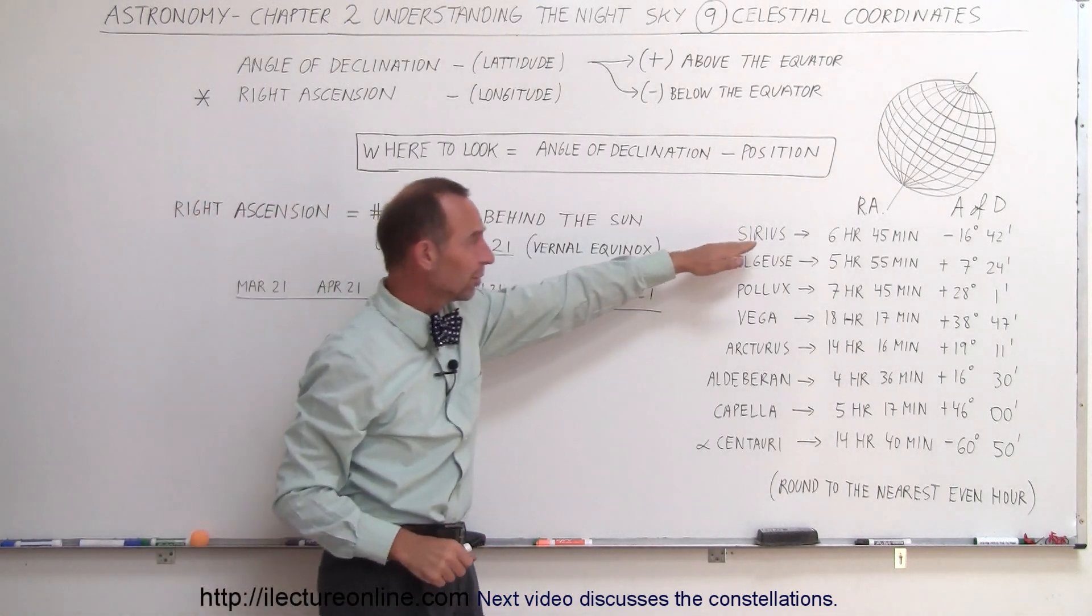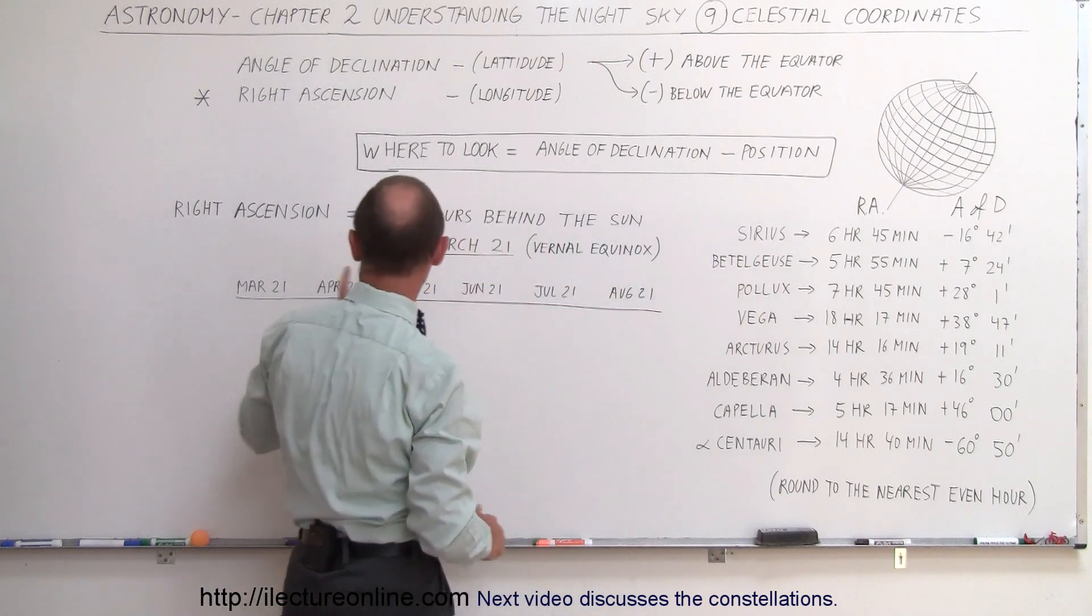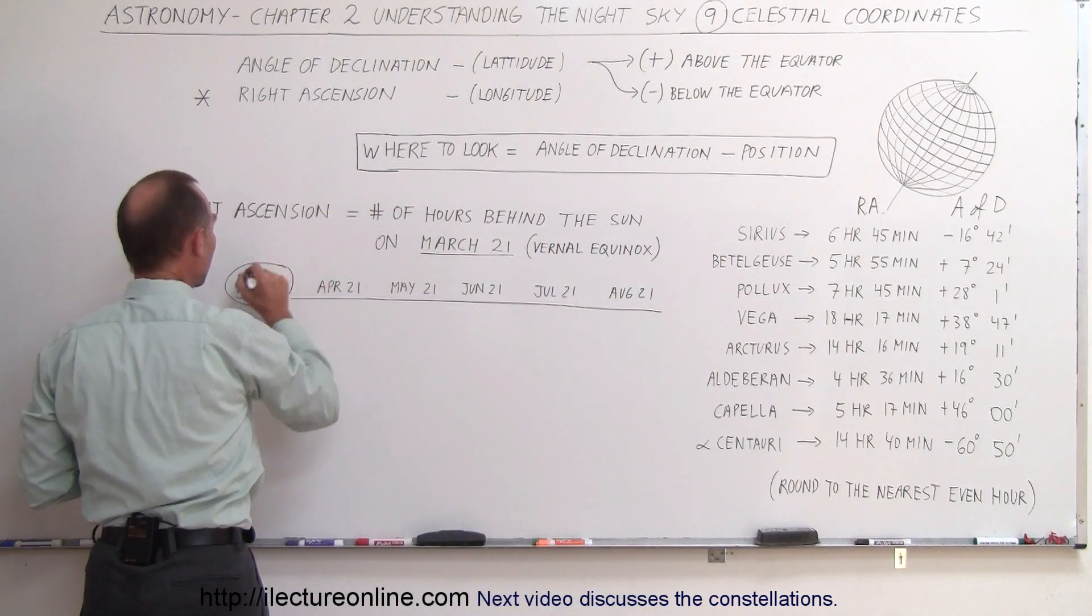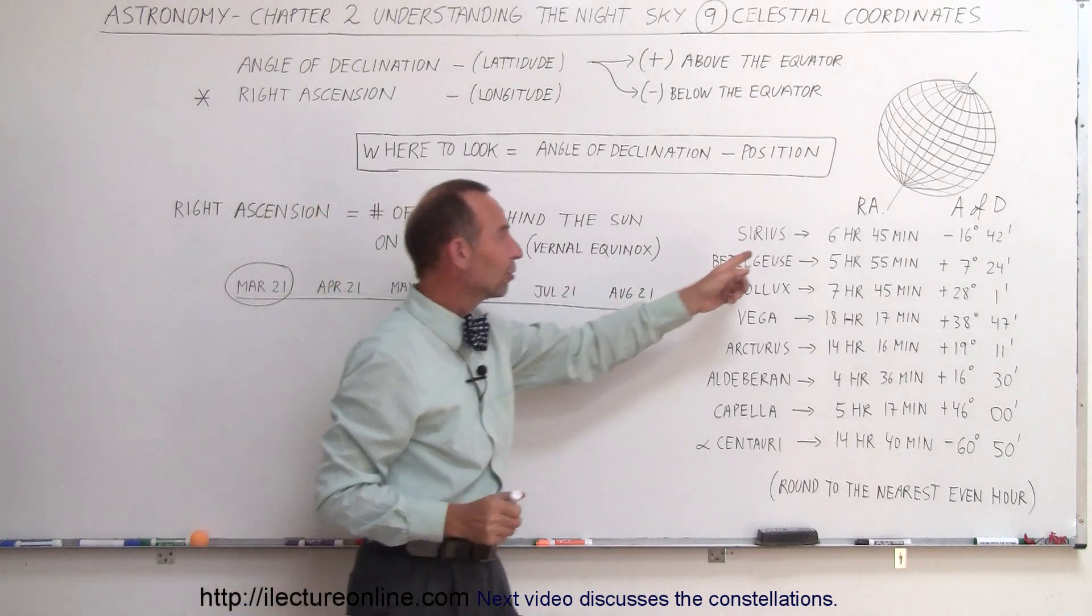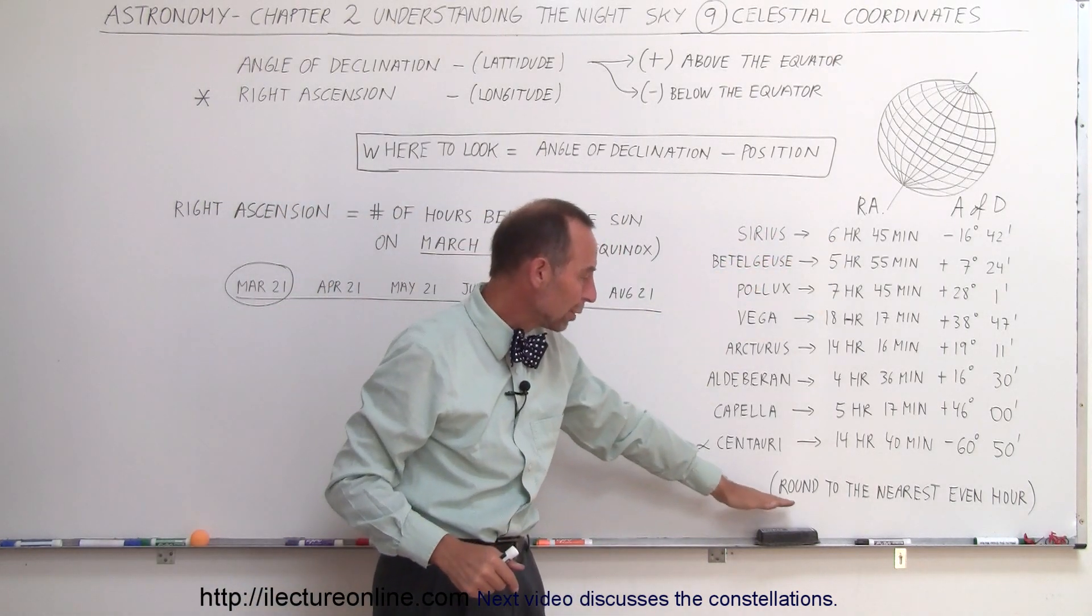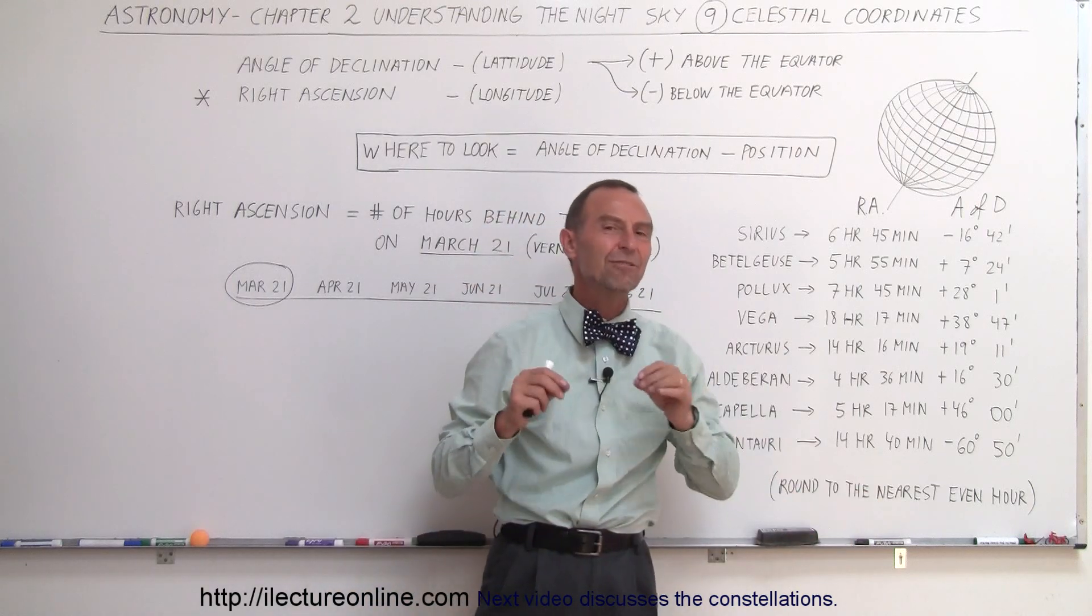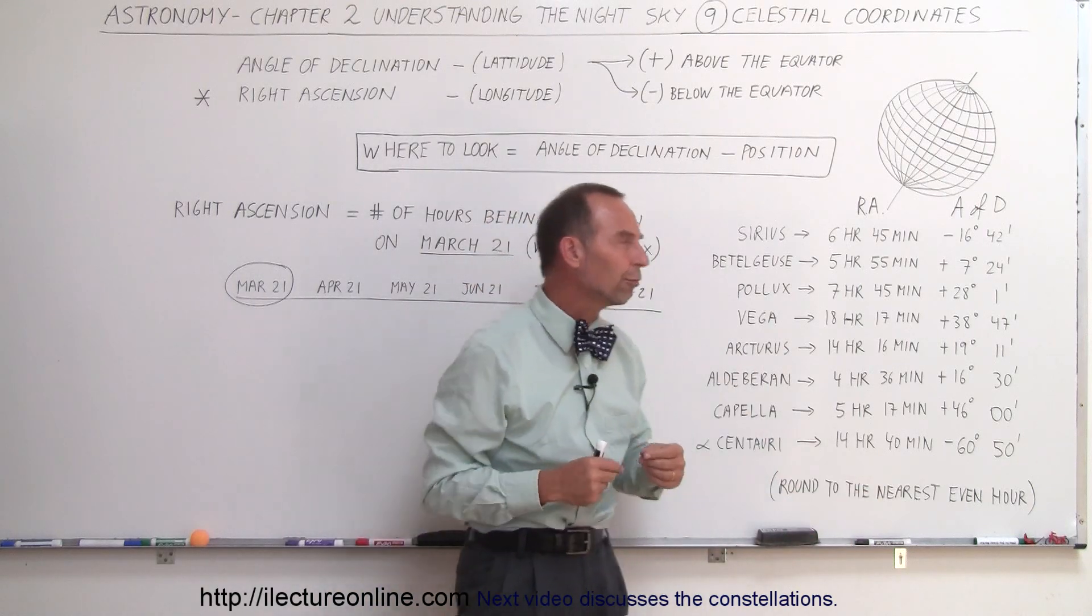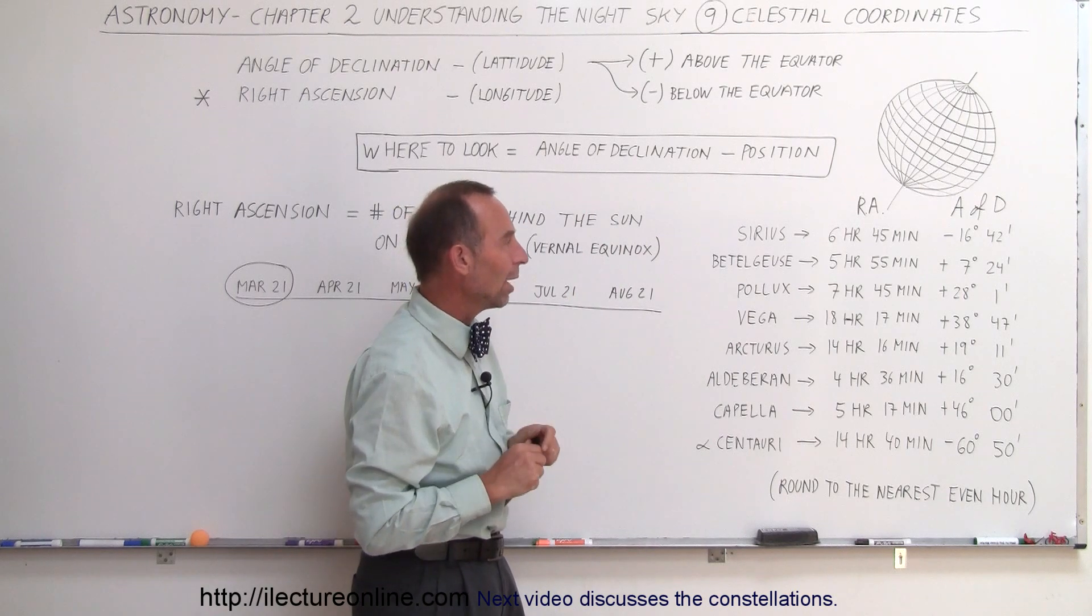If we take a look at Sirius, notice that on March 21st, and that's of course a special day right here, on March 21st, Sirius will be about six hours behind the Sun. Notice I have a little note here that says round to the nearest even hour, two, four, six, eight, and so forth. It makes it easier to deal with, and you'll see in just a moment why.